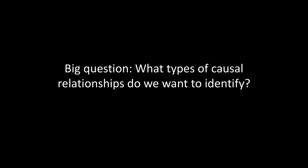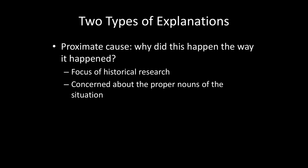Broadly speaking, we can think about causation in one of two ways. The first way is by thinking about proximate causation. A proximate cause asks the question: why did this happen in the way it happened? This is the type of question you'll see in historical research, and it's concerned about the details of the situation — the proper nouns of what happened. Who was involved? What day did it happen? Where did it occur?